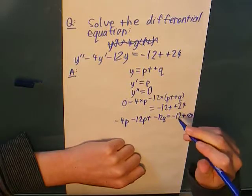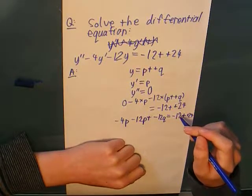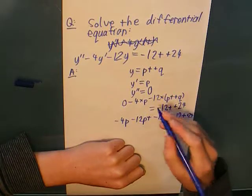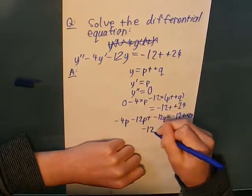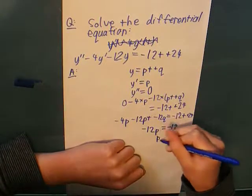Now we're going to have to equate the coefficients. So, equating the coefficients of t gives minus 12p equals minus 12, or p equals 1.